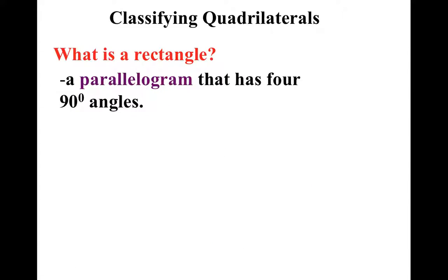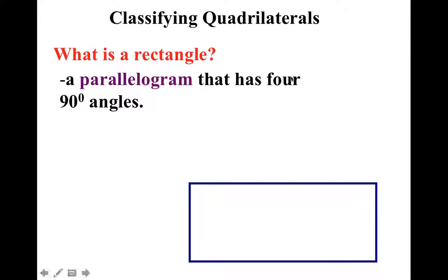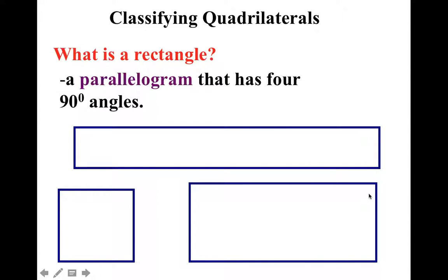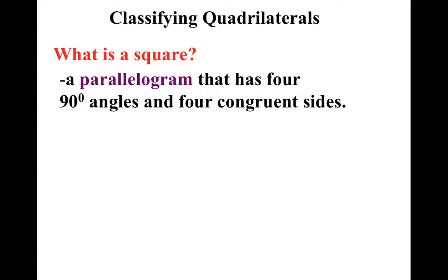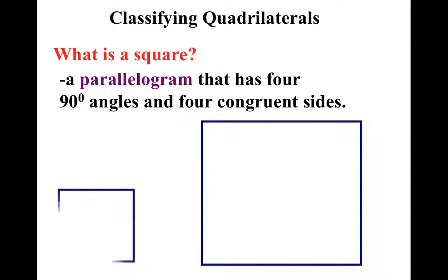What's a rectangle? It's a parallelogram that has nothing but 90-degree angles. Notice this is a perfect right angle, right angle, right angle, right angle. And a square is also a rectangle. So what's a square? A square is where a rhombus and a rectangle come together. It's a parallelogram that has all four 90-degree angles like a rectangle, and all four congruent sides like a rhombus. It's a very, very specific shape — maybe that's why we like it so much.